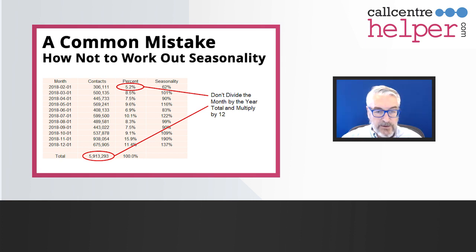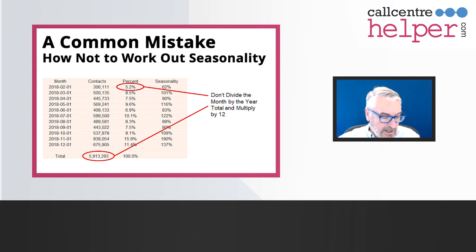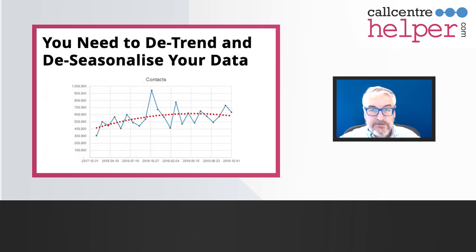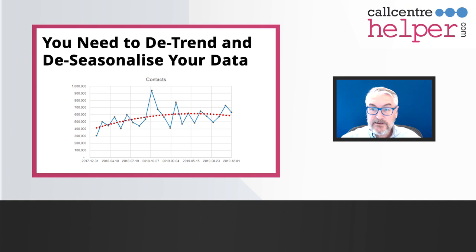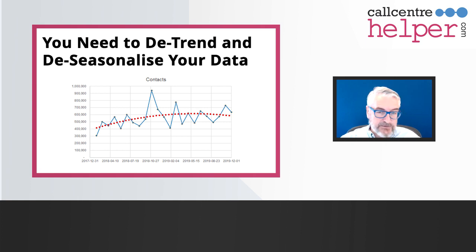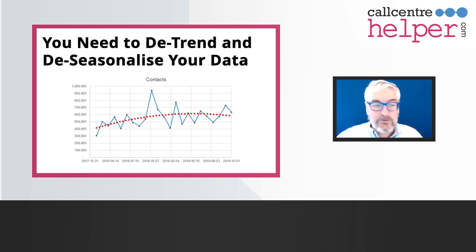There is one problem with this approach. It assumes the data goes down, but what you actually see is that generally at the beginning of the year the numbers are lower and at the end of the year they're higher — meaning there's a trend component in there. So what you have to do is first de-trend and then de-seasonalize the data. You work out what your trend is, remove the trend from your data, and then work out what your percentage seasonality is over the year.